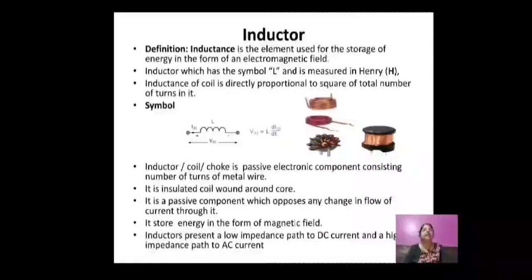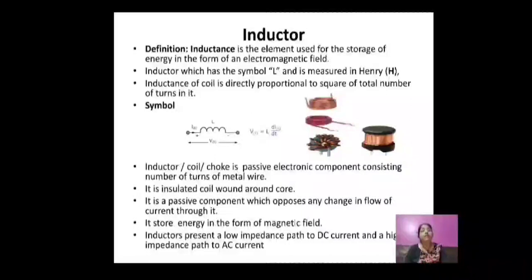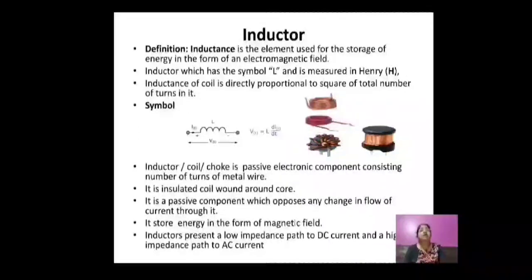Next passive component is the inductor. An inductor is a passive component that stores energy in the form of an electromagnetic field. Inductance is the property of an inductor, denoted by L. The unit of inductance is Henry (H). Basically, an inductor consists of a number of turns of metal wire or metal coil, also called a coil or choke. Inductor passes DC and blocks AC, presenting low impedance for DC and high impedance for AC.